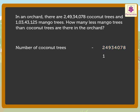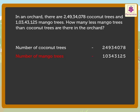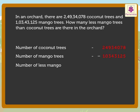One crore three lakh forty three thousand one hundred twenty five is the number of mango trees in the orchard. So we write the statement as: Number of mango trees — one crore three lakh forty three thousand one hundred twenty five. Now let us subtract these numbers to get the difference.